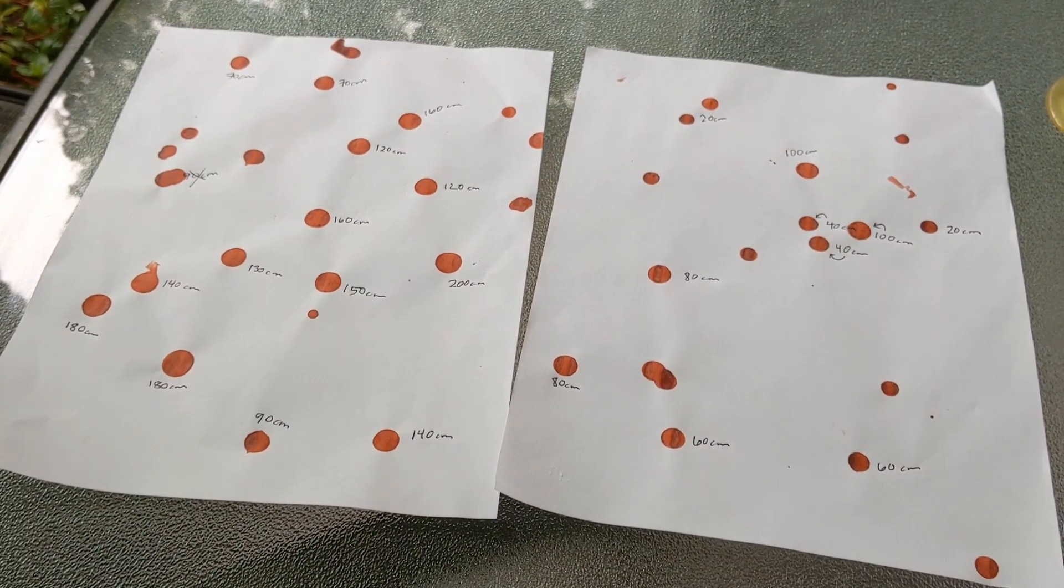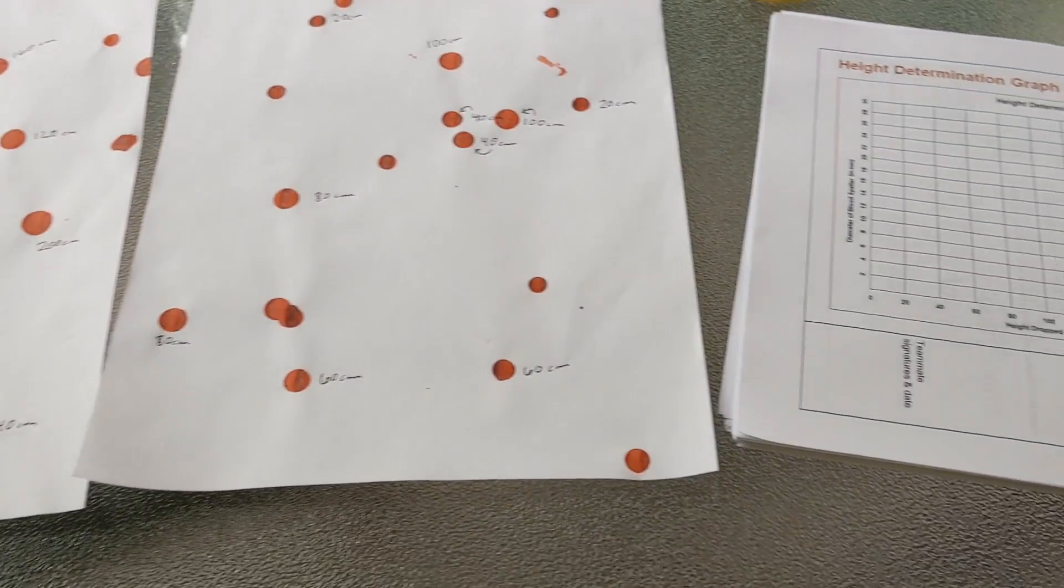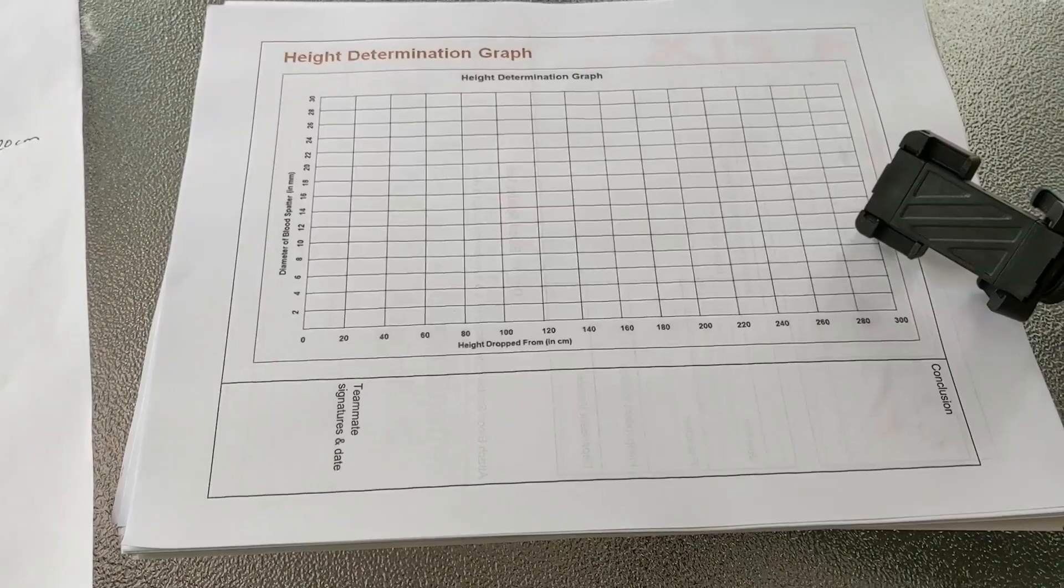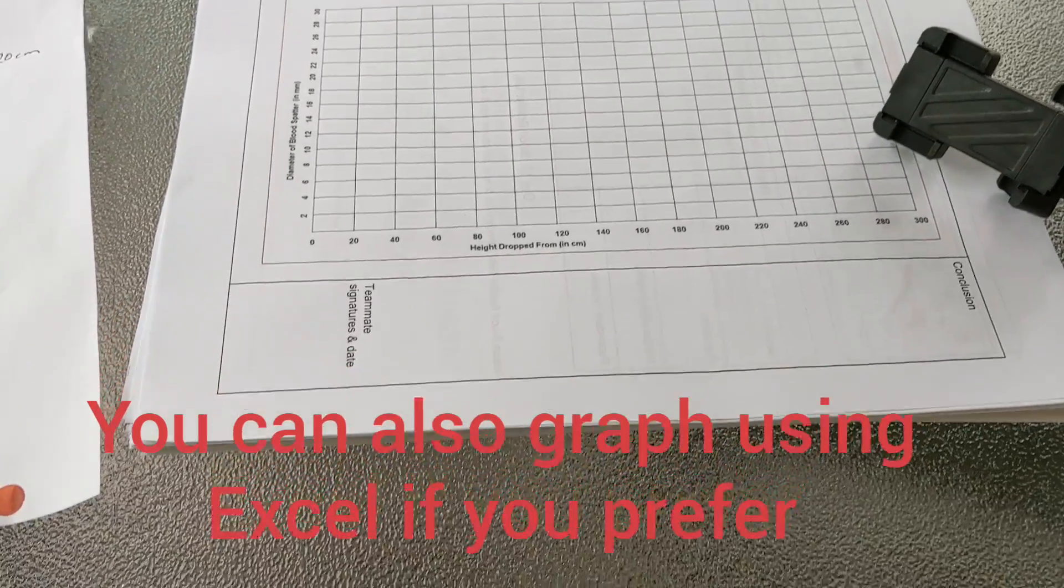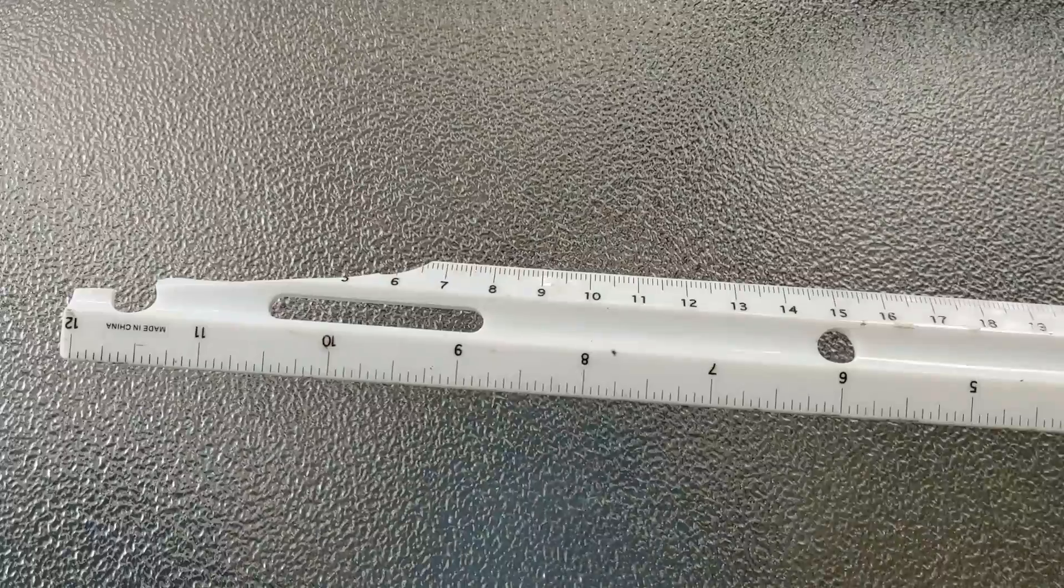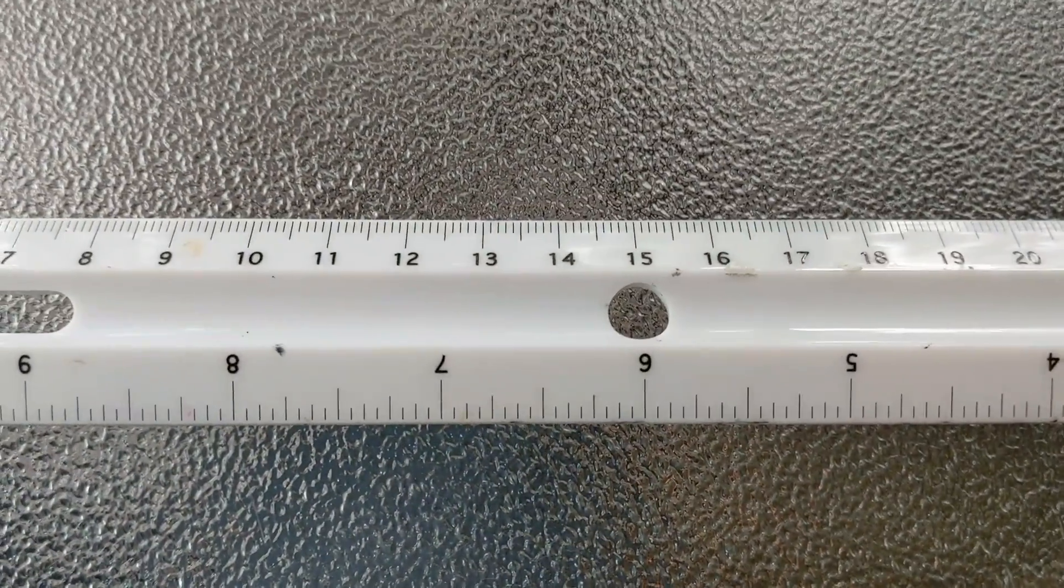To begin, you need your data in front of you and your graph paper. There is graph paper that you can use on the PLTW site. You also need a ruler. You can see mine's a little busted, but I'm just going to improvise and start at 10.